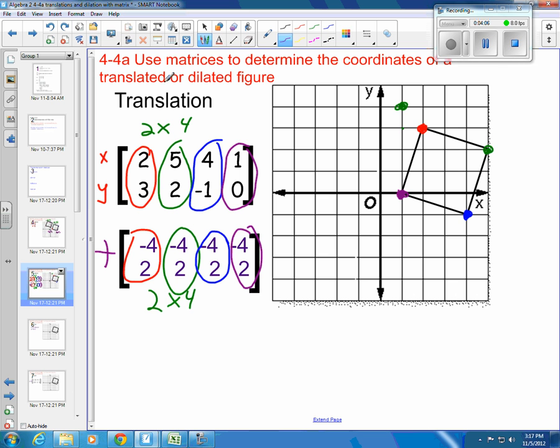And a translation is just an addition of a matrix with the same exact dimensions where the top value is how much you're moving it in the x direction and the bottom value is how much you're moving it in the y direction.